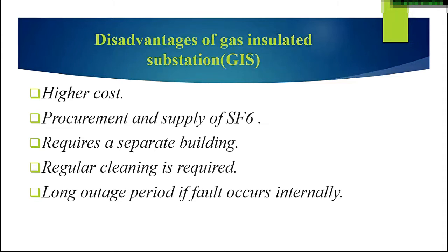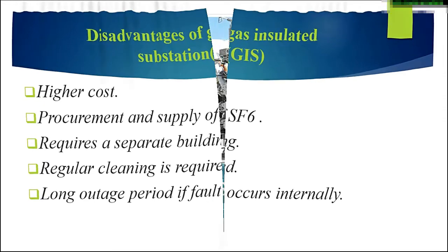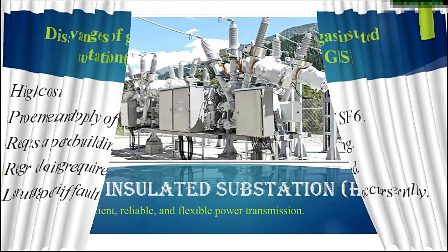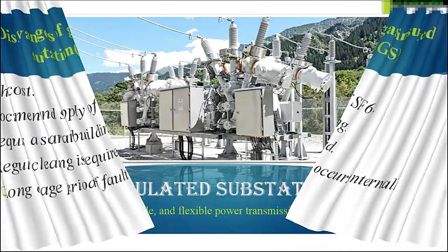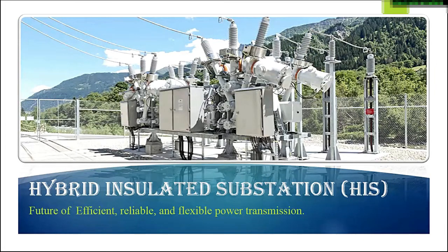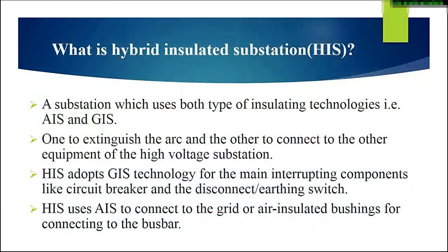To overcome these disadvantages, we have another substation technology: hybrid insulated substation, or HIS substation. These substations can be stated as the future of efficient, reliable and flexible power transmission. A hybrid insulated substation is a substation which uses both types of insulating technologies — that is AIS and GIS — one to extinguish the arc and the other to connect to the different equipment of the high voltage substation.